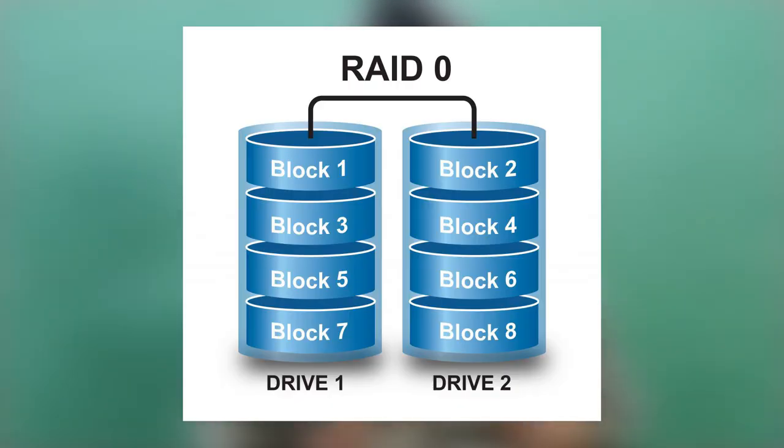First, we will talk about RAID 0. In RAID 0, you will have two drives. The data is not stored in one particular drive — if you have to copy a folder, the files are split between drive 1 and drive 2.